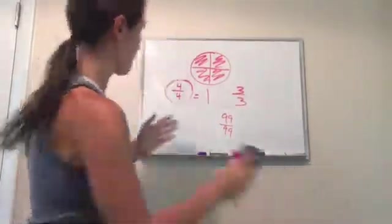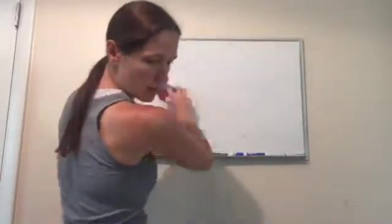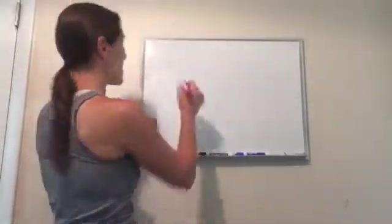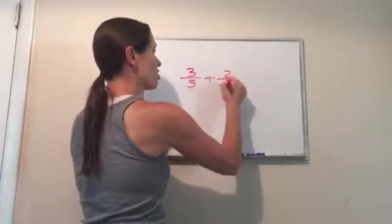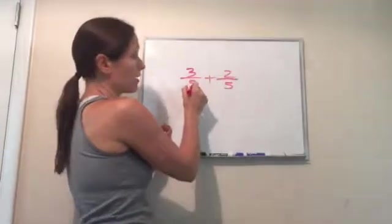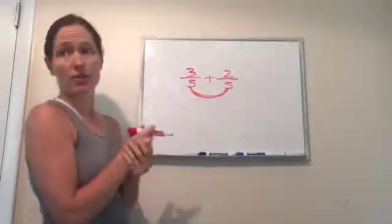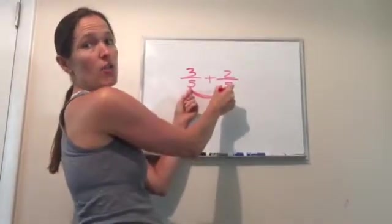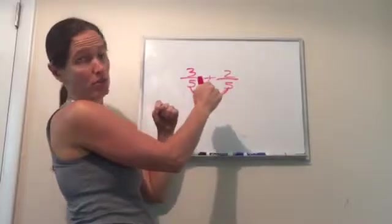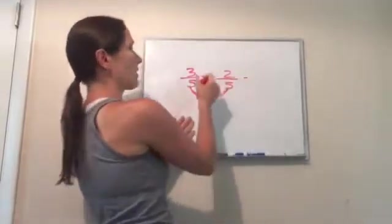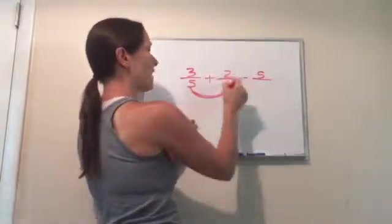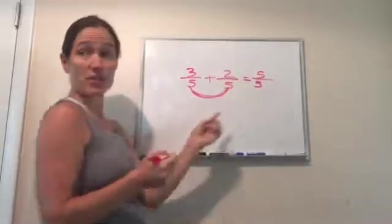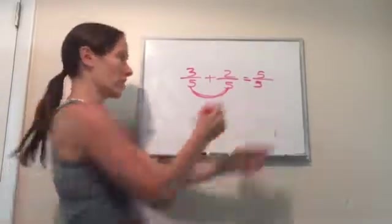You can always just add the numerators as long as what? The denominator is the same. If the denominator is different then we have to do something else. But the answer here would be three plus two is five, and then I move over a five, so that answer is now what? One, very good.